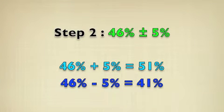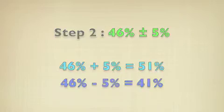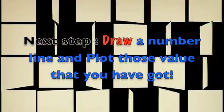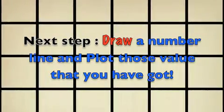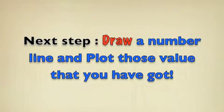Step 1: you have 54% plus or minus 5%. Adding gives you 59%, and subtracting gives you 49%.